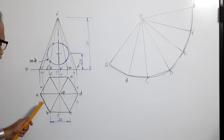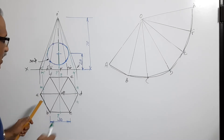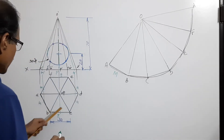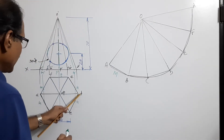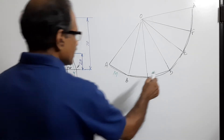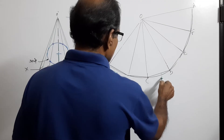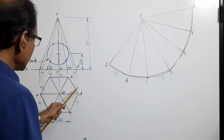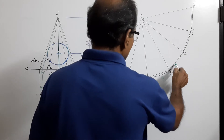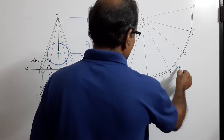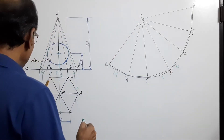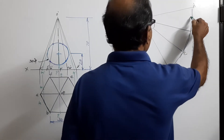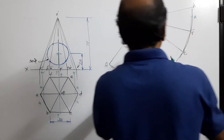Locate m: m is on the edge from A to B, this far away. And n is on the edge from D to C. Similarly, mark n on D to E and m on F to A. Connect them.